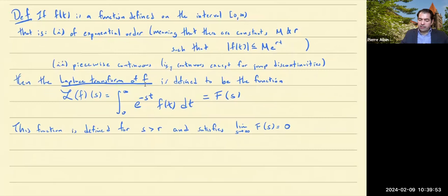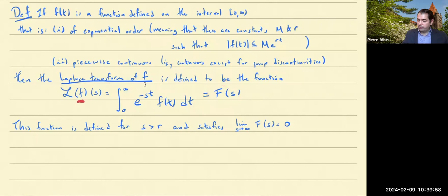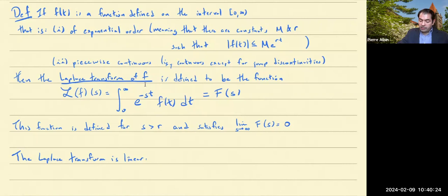That shows you that not every function is the Laplace transform of some other function, because you have to have decay as you go out to infinity. So before we do examples, let's mention some important properties. First, the Laplace transform is linear.